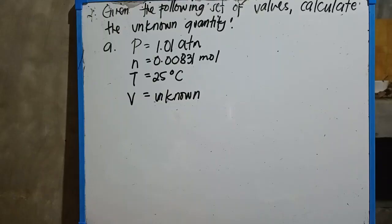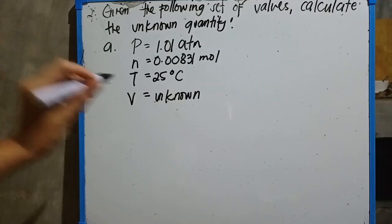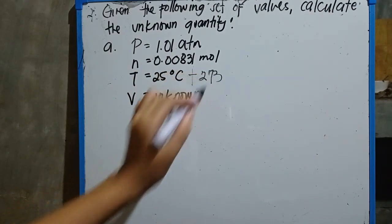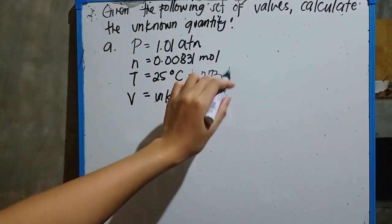For our second example: given the following set of values, calculate the unknown quantity. As you can see, for this example our volume is the unknown, and our temperature is in celsius, so we need to convert 25 to kelvin.